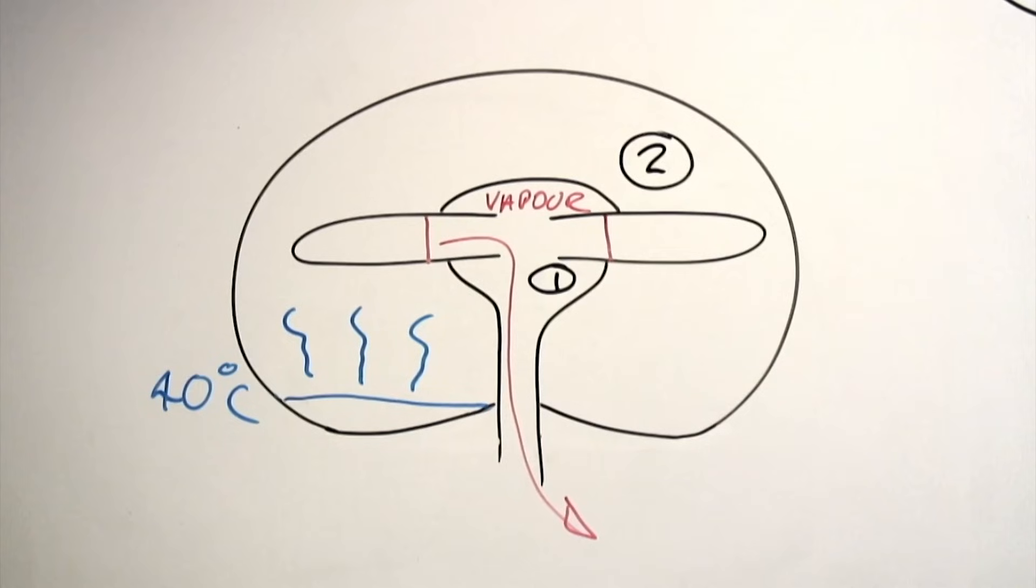To ensure that the system cannot overheat, the whole chamber is also controlled at the set temperature. Steam condenses on the sides of the flasks, but because the samples are boiling under vacuum, they remain cold.